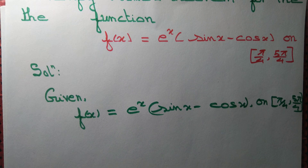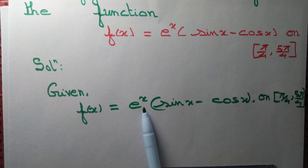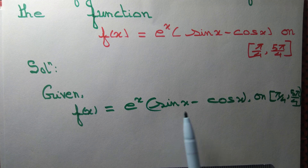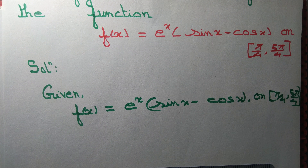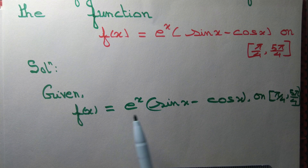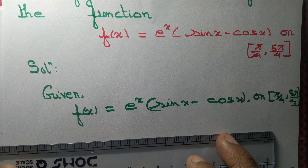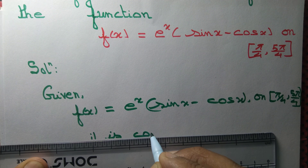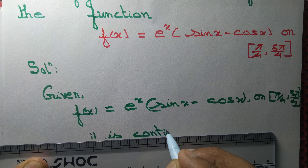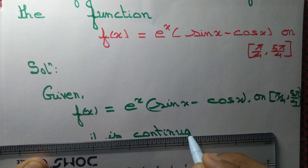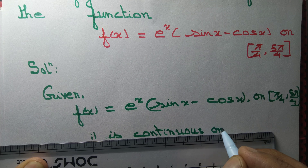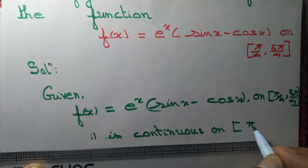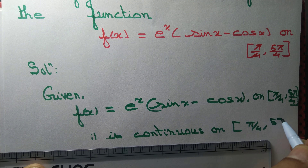First, we check continuity. Exponential functions are continuous, and sin and cosine functions are also continuous. The sum of sin and cosine is continuous, and the product of continuous functions is continuous. Since it is continuous throughout ℝ, f(x) is continuous on [π/4, 5π/4].